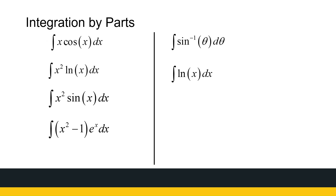Here are some examples of integrals we're going to calculate using integration by parts. In each case, we've got two functions that are multiplying, and they're not really closely linked — they don't have much in common. One is not the other's derivative; if that were the case, we would use substitution. But we've got two functions that aren't linked that much, so we'll look at how to deal with that type of integral.